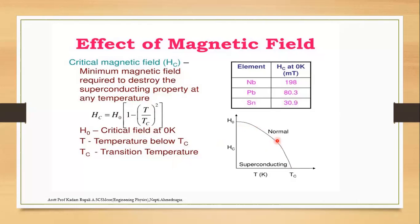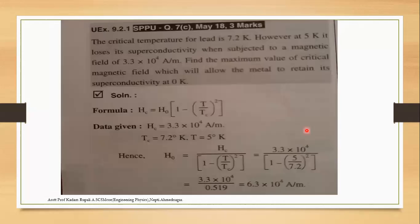When the condition suddenly disappears and becomes zero at the critical temperature, it shows the superconducting state. The critical magnetic field is an important exam topic — three or four mark questions are related to critical temperature. For example, the critical temperature for lead is 7.2 Kelvin.